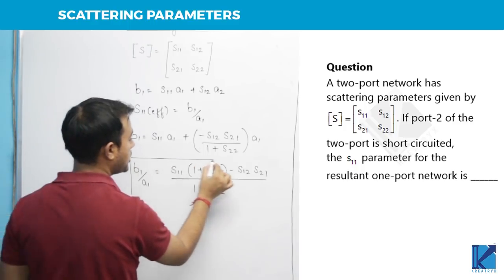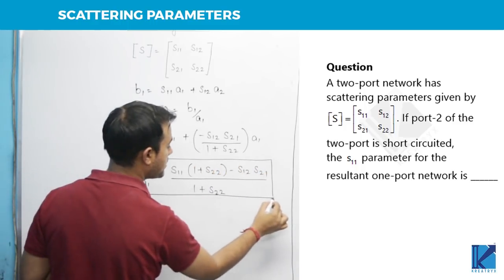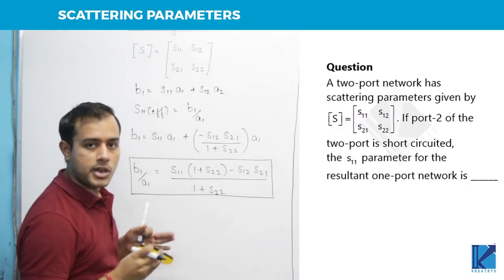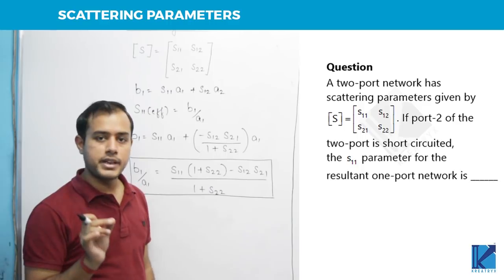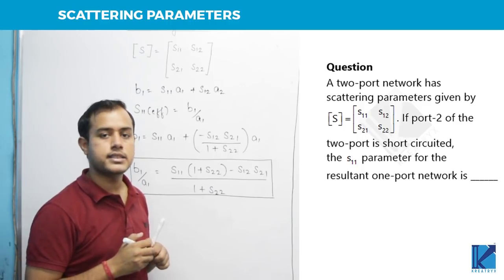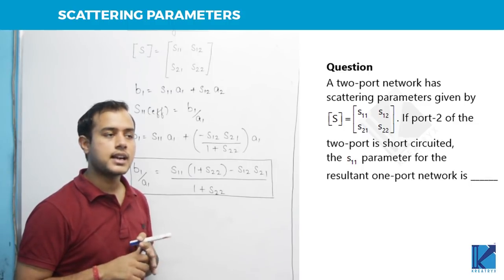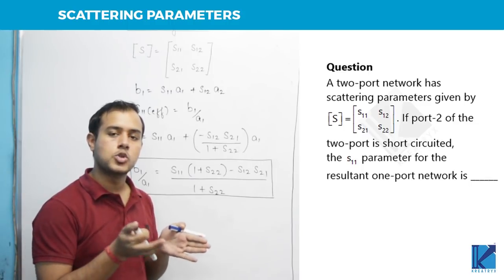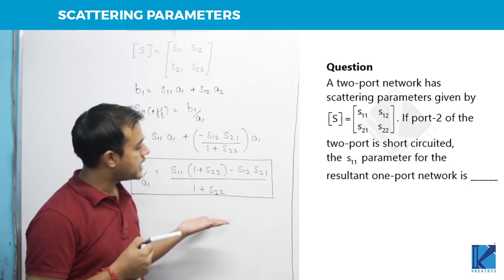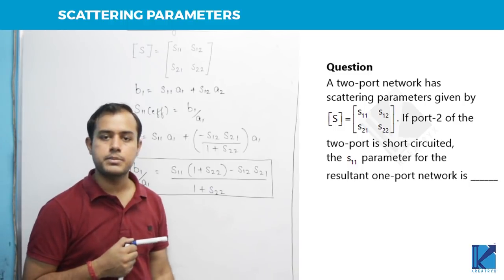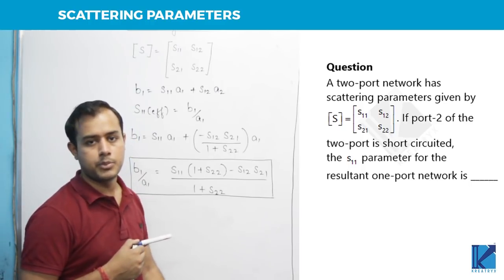So two things you need to remember. One is the physical meaning of the scattering parameters: what is the formula for each and every parameter in this matrix? The second thing, what happens if a line is terminated in characteristic impedance or if a line is short circuited? These parameters are kind of common parameters between your two-port networks and your EMT.